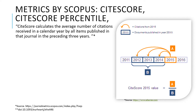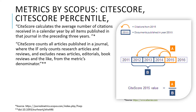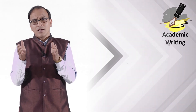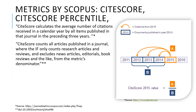CiteScore calculates the average number of citations received in a calendar year by all items published in that journal in the preceding three years. So the CiteScore window is between the two-year and five-year impact factor windows — Scopus chose a midway three-year window as an optimized approach. Importantly, CiteScore counts all articles published in a journal, whereas the impact factor only counts research articles and reviews, excluding news articles, editorials, book reviews, and the like from the denominator.